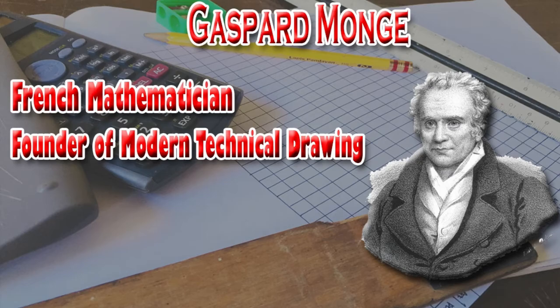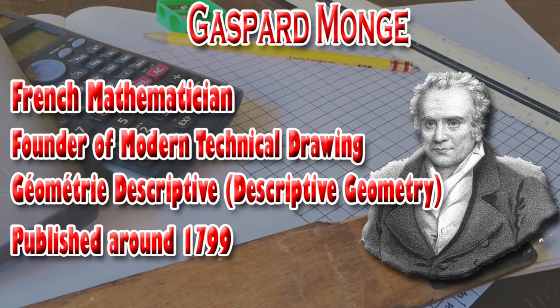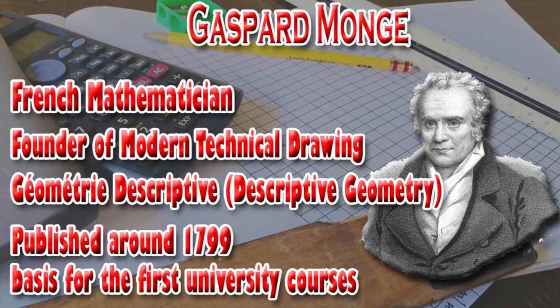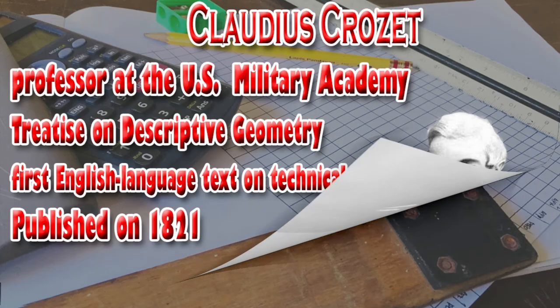Monge's thoughts on the subject, Géométrie Descriptive or Descriptive Geometry, published around 1799, became the basis for the first university courses. In 1821, the first English-language text on technical drawing, Treatise on Descriptive Geometry, was published by Claudius Crozet, a professor at the U.S. Military Academy.